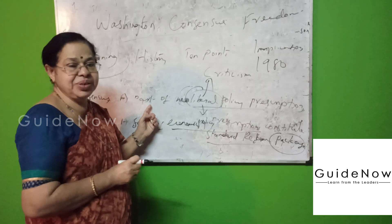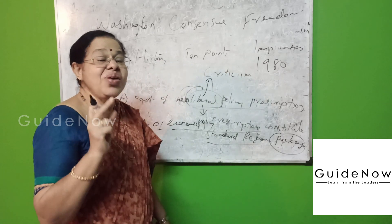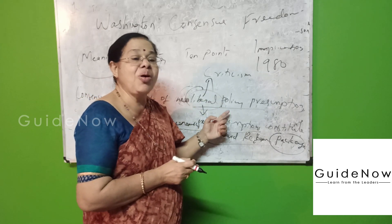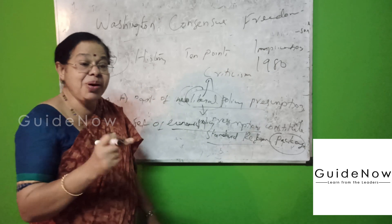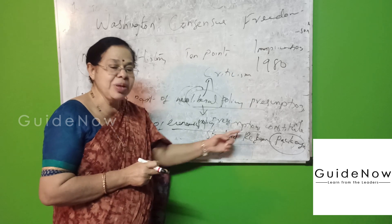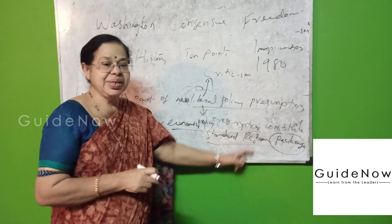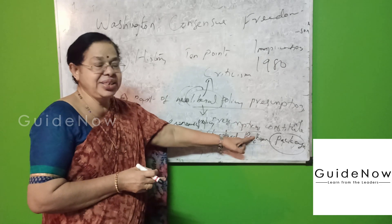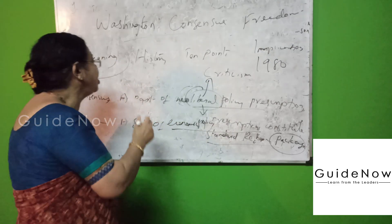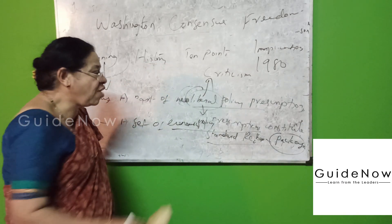To summarize: consensus represents a part of neoliberal prescriptions which are widely accepted, with special emphasis on freedom or liberalism. Washington Consensus represents a set of economic policy prescriptions constituted into standard reform packages, with so many reforms included. Now, what is the necessity of Washington Consensus?